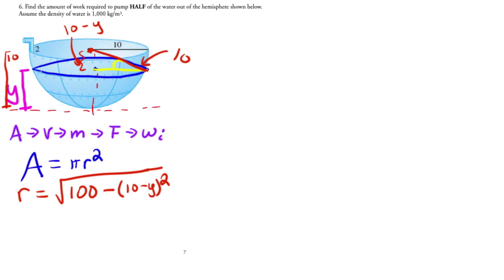So the area of the slab is going to be equal to pi times this guy squared, which is going to be 100 minus (10 minus y) squared. So 100 minus (10 minus y) squared is 100 minus 20y and then plus y squared.